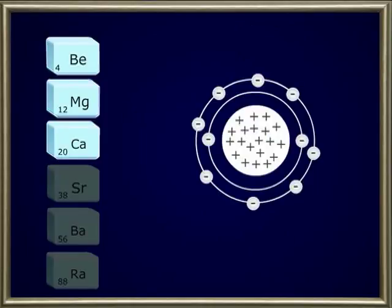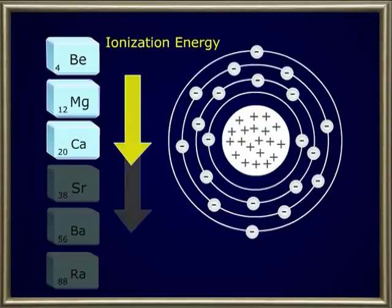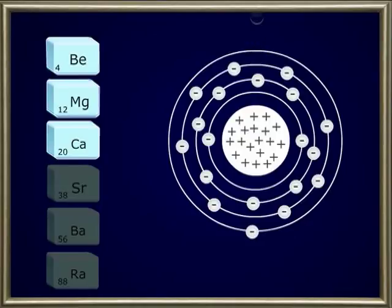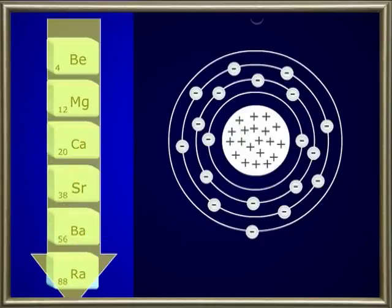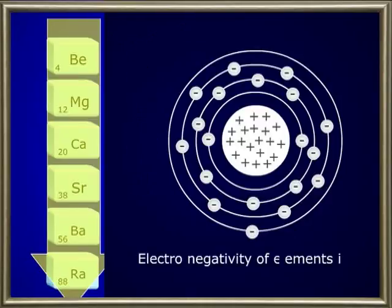Now let's find the relationship of the earlier properties with the electronegativity of the alkaline earth metals. As the atomic size increases, the binding attraction of electrons with the respective nucleus decreases automatically. Therefore the ionization energy also decreases, making it easier to remove an electron from the alkaline elements as we move down in the table. Based on the decrease in ionization energy, the electronegativity level also decreases as we move down from beryllium to radium. Electronegativity of elements is measured in Pauling scales.